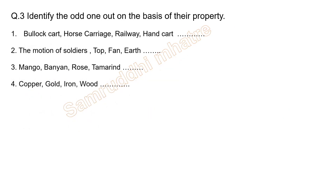Third question: identify the odd one out on the basis of their properties. First group: bullock cart, horse carriage, railway, and hand cart. Railway is the odd one out because the other options use muscular force.